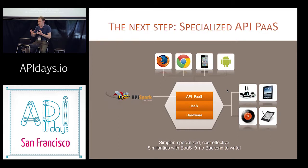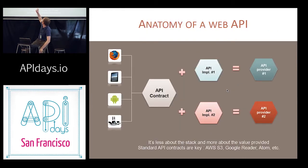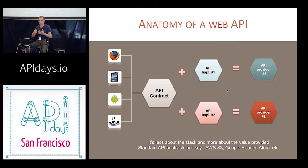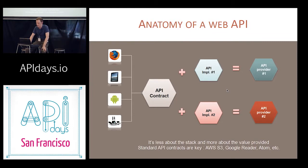The next step in simplification is to merge the REST framework layer with a generic cloud layer. If you do that, you get a specialized platform as a service that is really designed for web APIs and websites, where you can think about resources, representations, and web applications. API Spark is one example of such a platform — fully aligned on the principles of the web.